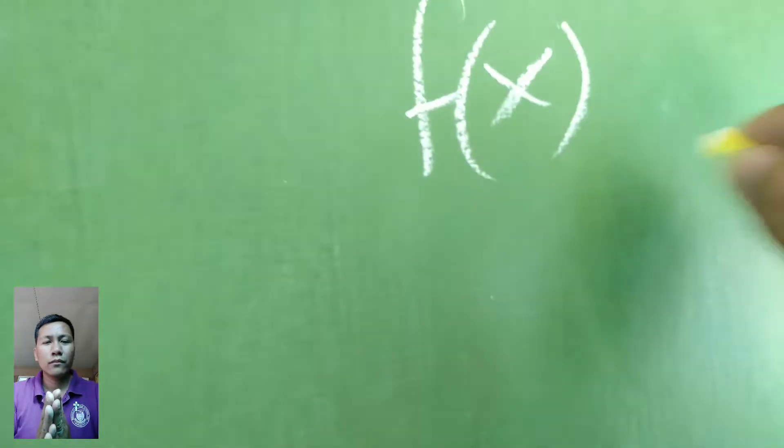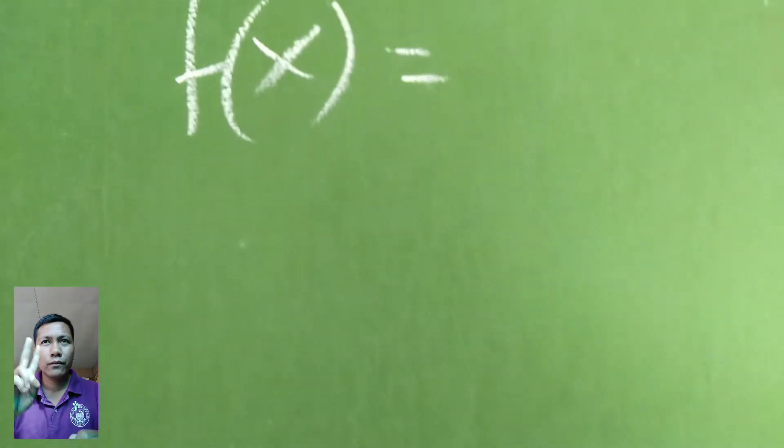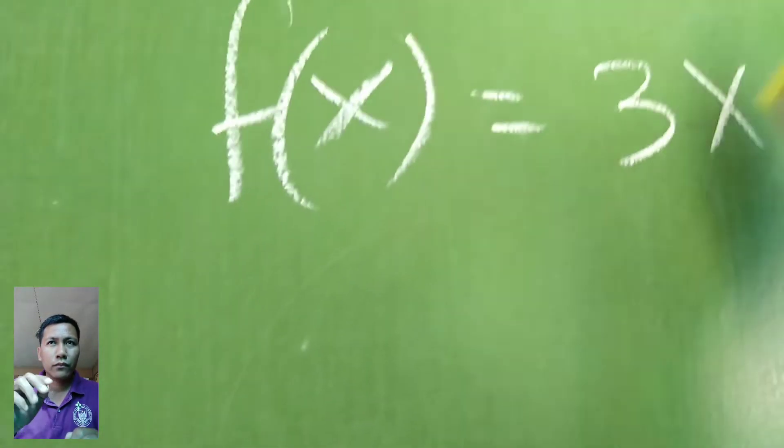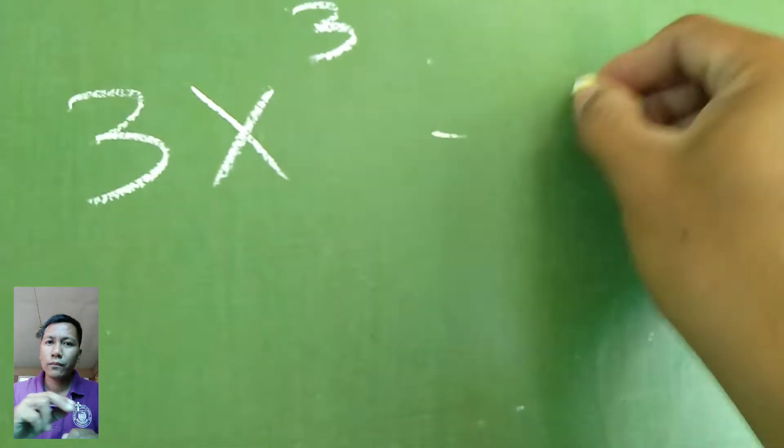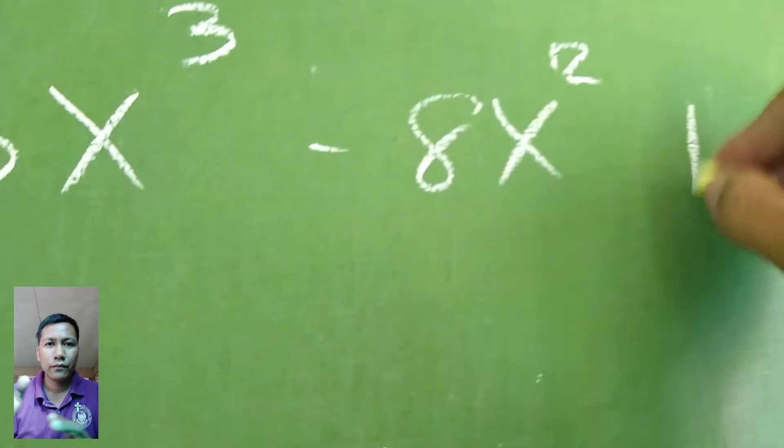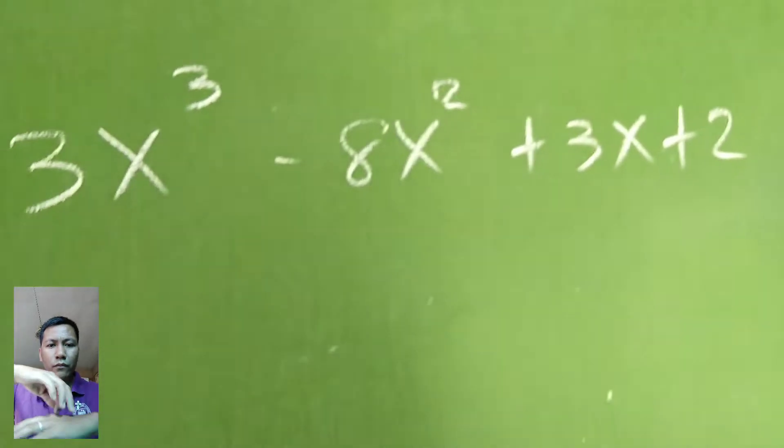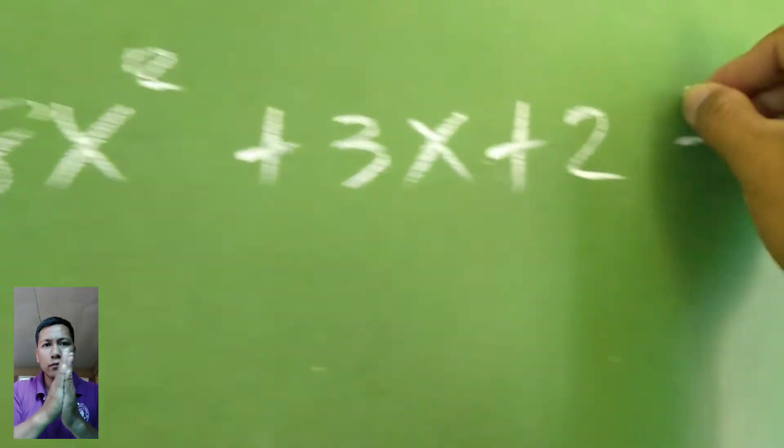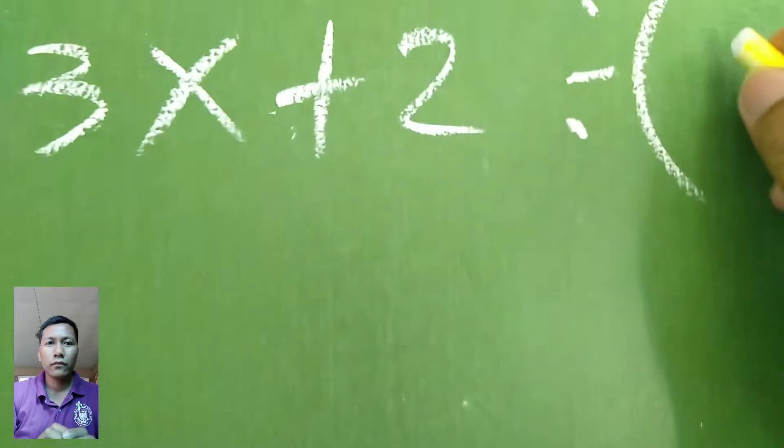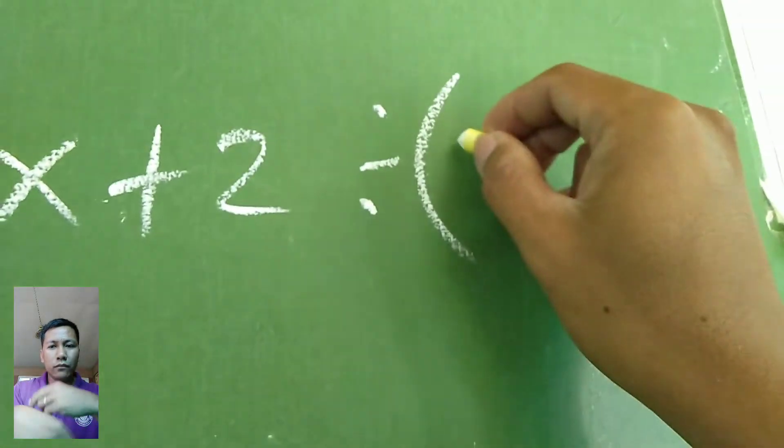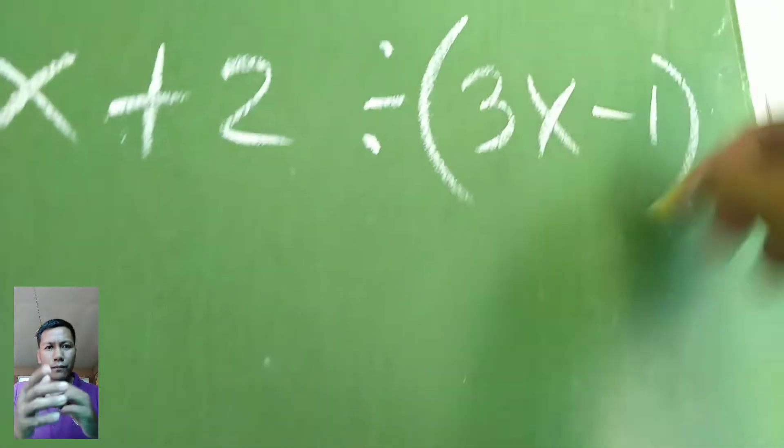We have function of x. Kahit ano na lang ito. So we have 3x cubed minus 8x squared plus 3x plus 2. And then the divisor is divided by, we have 3x minus 1.